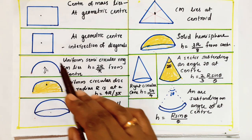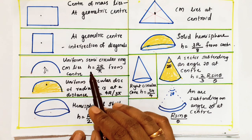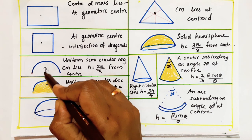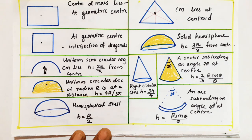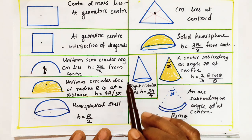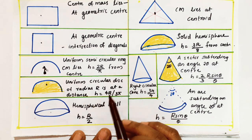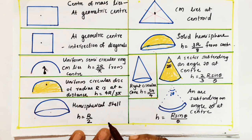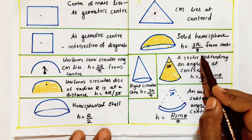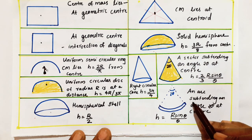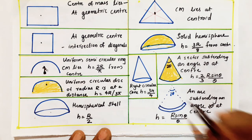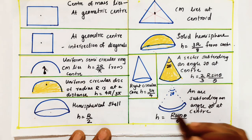For a uniform semicircular ring, its center of mass is located at a distance h equals 2r by π from the center. For a uniform semicircular disc, h equals 4r by 3π. For a hemispherical shell, h equals r by 2. For a solid hemisphere, h equals 3r by 8. For an arc subtending an angle of 2θ, h equals r·sinθ by θ.